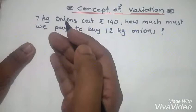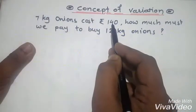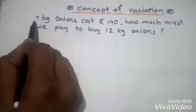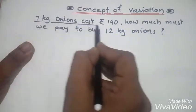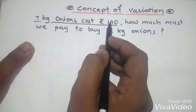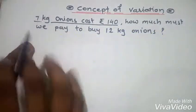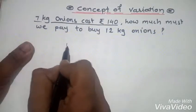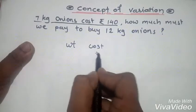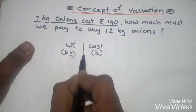We will try to understand the concept from this question. If 7 kg of onions cost ₹140, then how much must we pay to buy 12 kg of onions? We have two numbers: 7 kg is the weight of onion and 140 is the cost. We can make a table with columns for weight (in kg) and cost (in rupees).